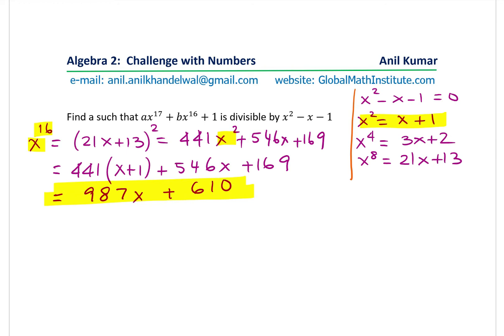I think we can substitute back into our equation and work with the equation itself. So the equation given to us is ax to the power of 17. So and then we didn't find what 17 is, but we can always take, we can write this like this: ax into x to the power of 16 plus bx to the power of 16 plus 1. So we could do this and we can equate this to 0. So when you divide, it should be 0, remainder is 0. That's what we're trying to say. So now substituting what this 16 value is, we get ax times 987x plus 610 plus b times 987x plus 610 plus 1 equals to 0.